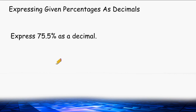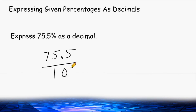Sometimes you may be given a percentage with a decimal already in it. The rule still applies — take the decimal point and move it two spaces to the left. That's because we are dividing by 100, and moving a decimal point two spaces to the left makes that value 100 times smaller.